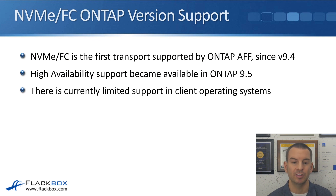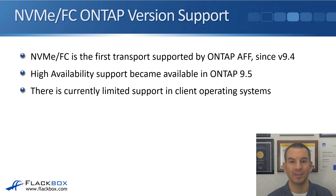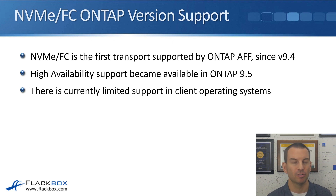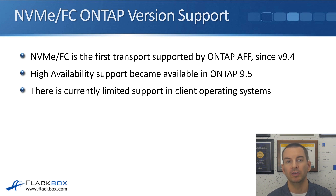NVMe over FC is the first transport supported in ONTAP, and it has been available since ONTAP 9.4 on AFF systems. There was a pretty big drawback in ONTAP 9.4: high availability support was not supported, so there was no redundancy. That limitation was overcome in ONTAP version 9.5, which makes it a much more feasible option. However, there's still not a huge uptake because there's currently limited support in client operating systems. If the client OS doesn't support it, you can't use it — but as time goes on, you should see much more widespread support across client operating systems as well.